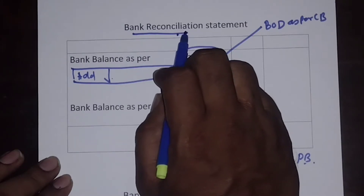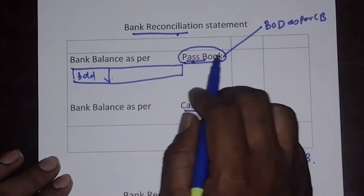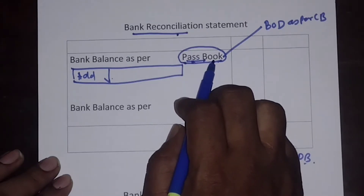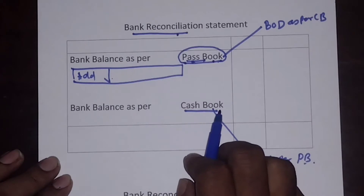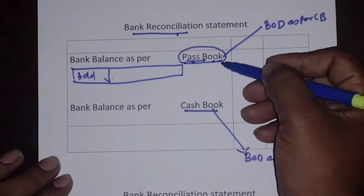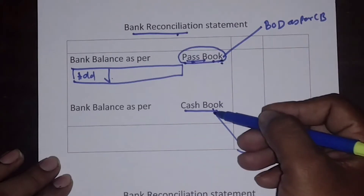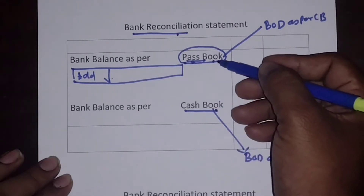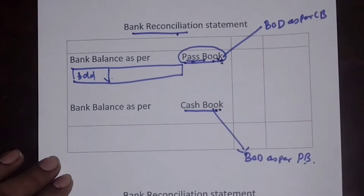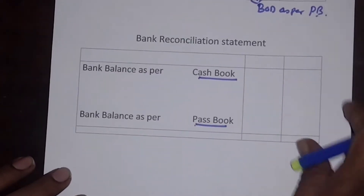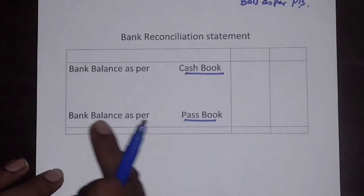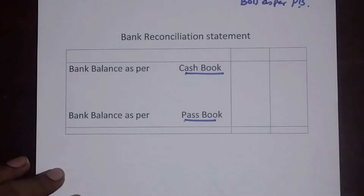Very simple to remember this concept. The very first book given is bank balance as per pass book, and the expected answer will be bank balance as per cash book. The procedure is: the first book is pass book, the second book is cash book. If I start with the pass book, I will get the answer with the cash book. Similarly, if I start with the cash book, it will end with the bank balance as per pass book.